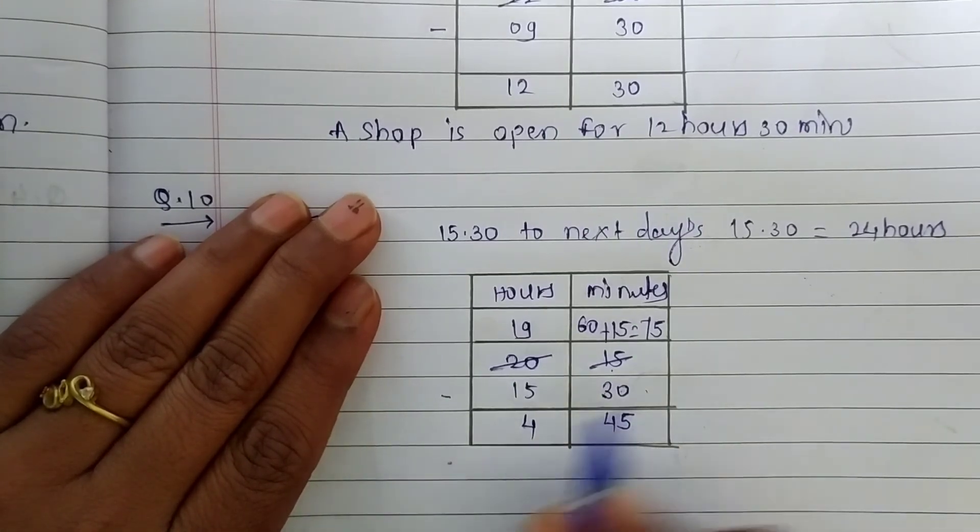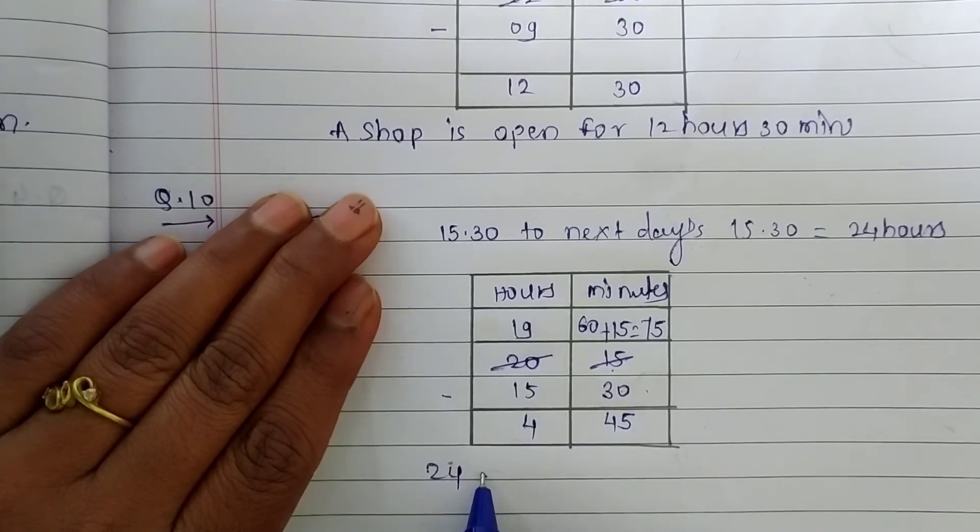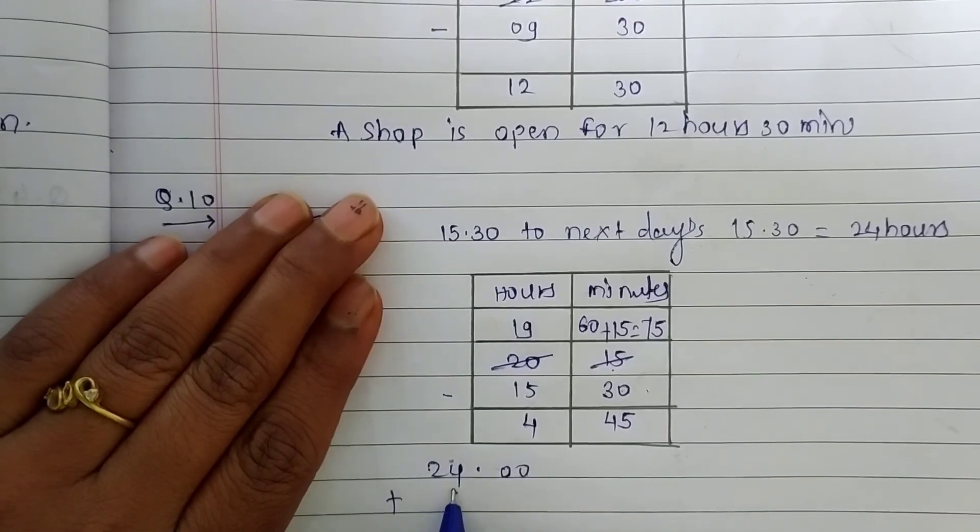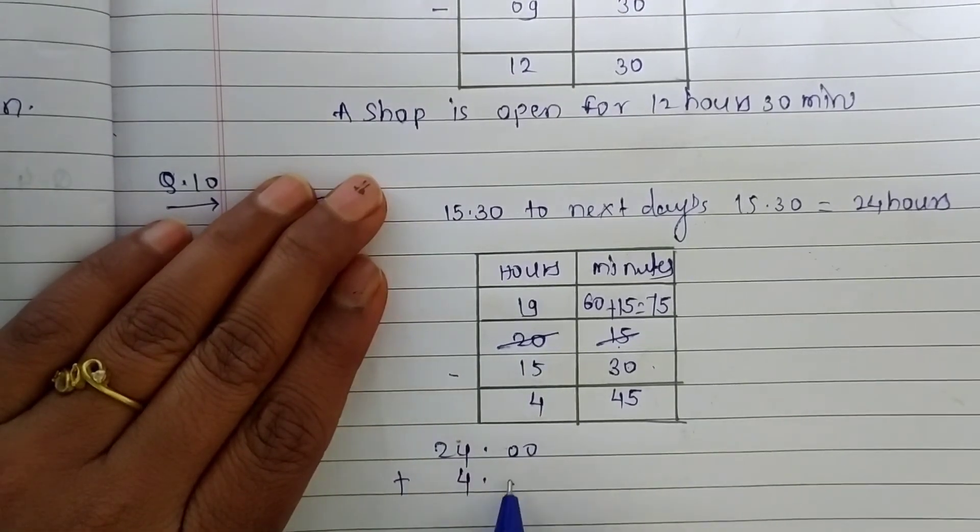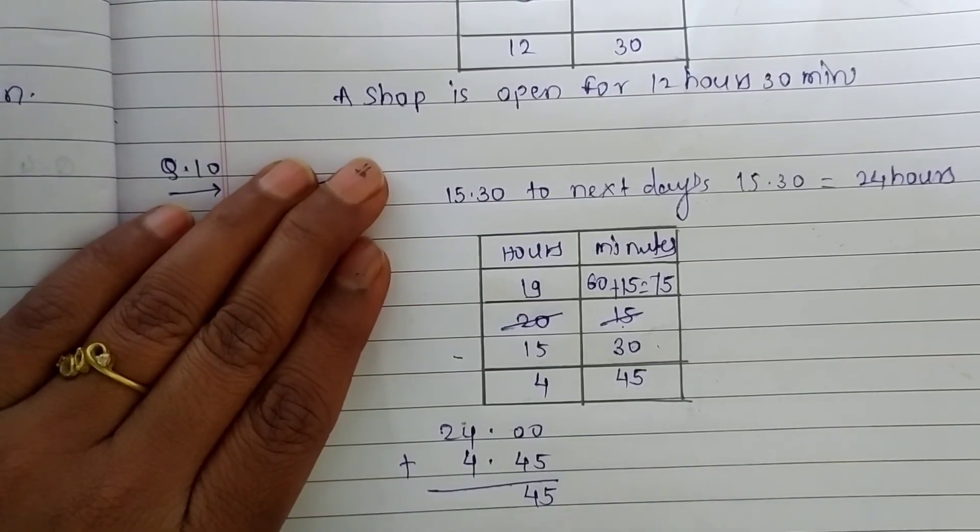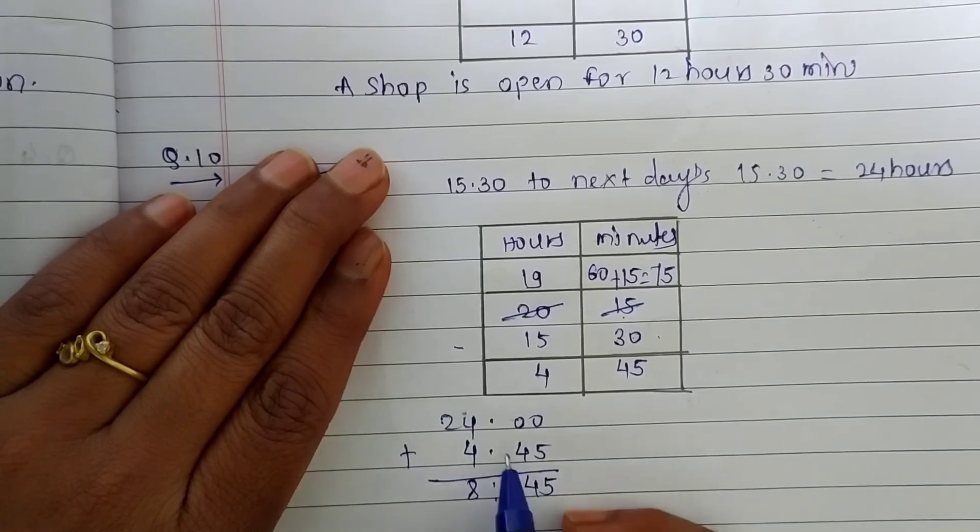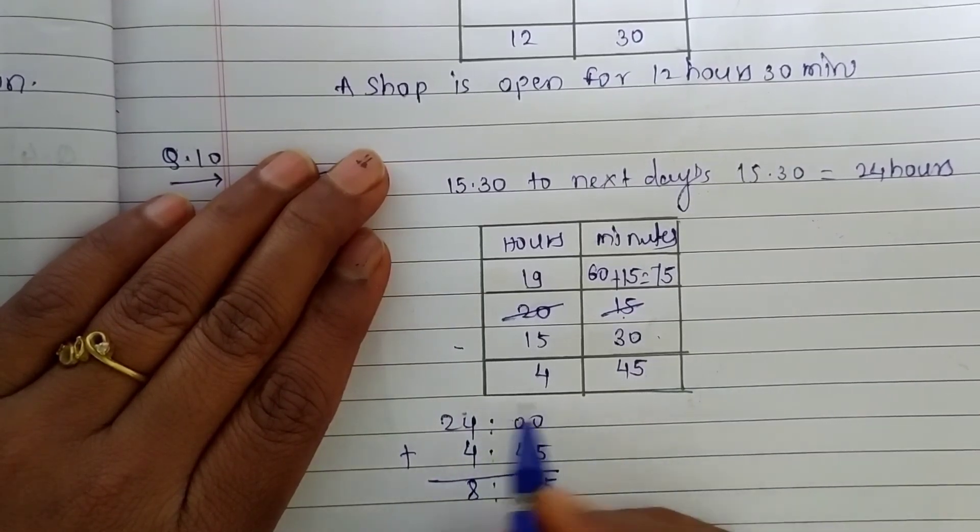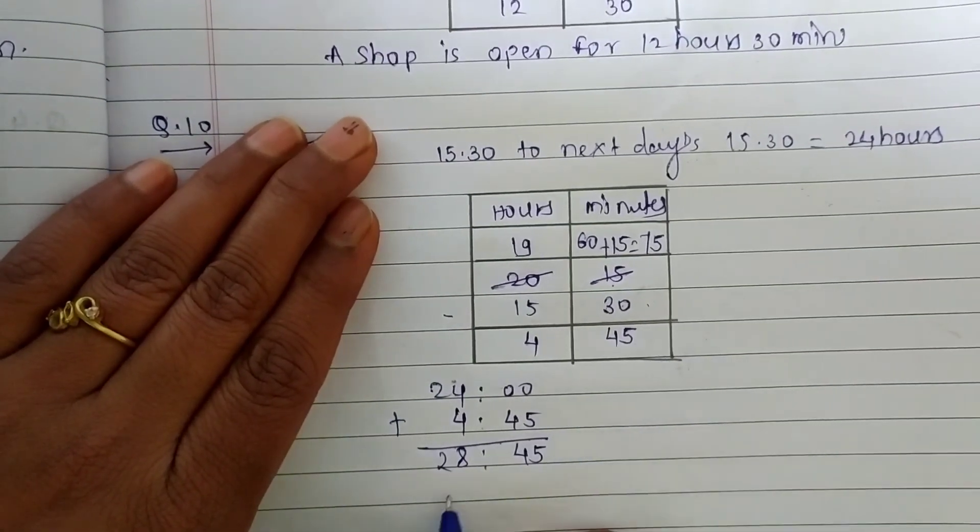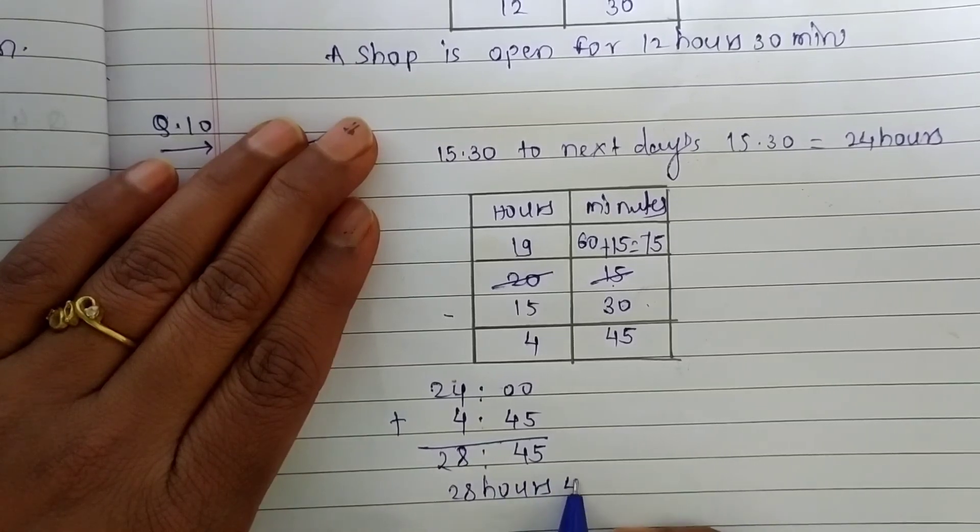Let's add them in 24 hours. 24 plus 4 hours and 45 minutes. The total time is 4 plus 4. It's 8. And 2. 28 hours and 45 minutes.